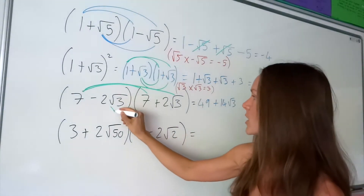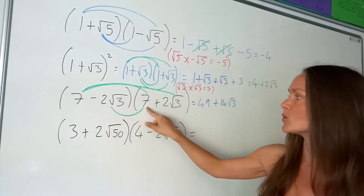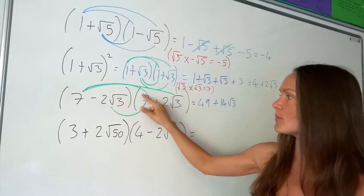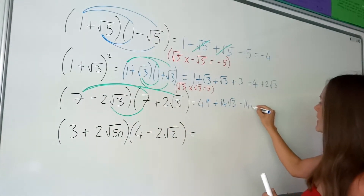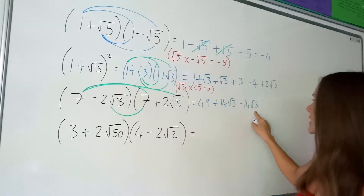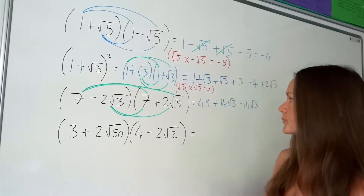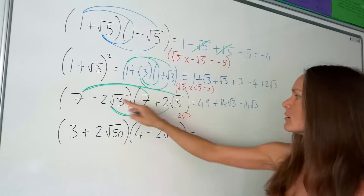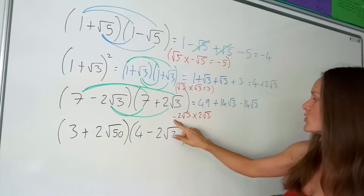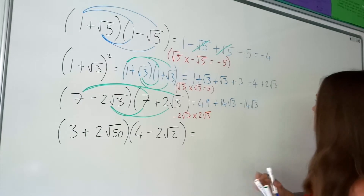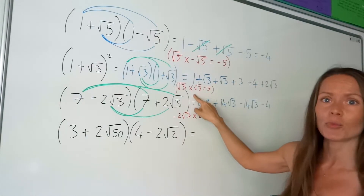Now these two terms here: the same as before except the sign has changed. So it's negative 2 root 3 multiplied by 7. Multiplying those two numbers together: negative 2 times 7 is just negative 14, and there's a root 3 attached to that 2, which stays the same — giving negative 14 root 3. Now for the last two terms: negative 2 root 3 multiplied by positive 2 root 3. Minus 2 times 2 gives me negative 4, and root 3 multiplied by root 3 is just 3.